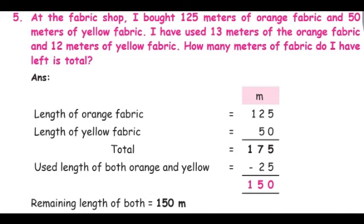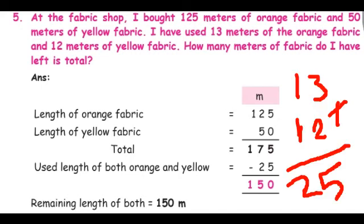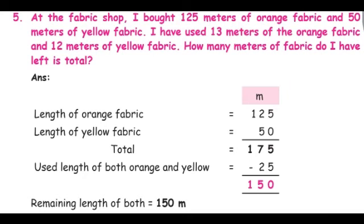I used 13 meters of orange fabric as well as 12 meters of yellow fabric. Adding 13 plus 12 gives us 25 — that is the total used length of both fabrics. Now I am going to subtract 25 meters from the total length of fabric: 175 minus 25 equals 150. The remaining length of fabric is 150 meters.